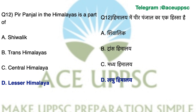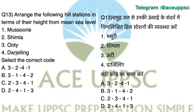Question number 13. Arrange the following hill stations in terms of height from mean sea level. The answer is A: 3, 2, 4, 1. The highest is Ooty at around 2240m, then Shimla at 2206m, then Darjeeling at 2042m, and Mussoorie at around 2005m.